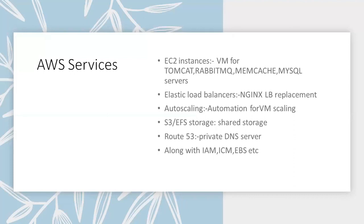We are using AWS cloud computing. The services we are going to use in this project are EC2 instances — virtual machines for Tomcat, RabbitMQ, Memcache, and MySQL servers — elastic load balancers, auto scaling for VM scaling, S3/EFS for storage, Route 53 as a private DNS server. Along with these, we will also be using IAM, ACM, EBS, and other related services.